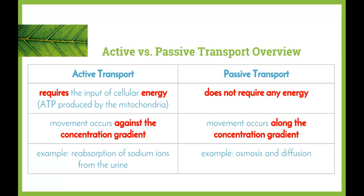We have discussed these a few times but this will just help to bring our memories back. Active transport is movement that requires the input of cellular energy — that is ATP, produced by the mitochondria through the process of respiration. Movement occurs against the concentration gradient, from an area of low concentration to high concentration. An example that occurs in the kidneys includes the reabsorption of sodium ions from the urine, which is dependent on feedback from the body — so if we need to retain salt, reabsorption will take place.